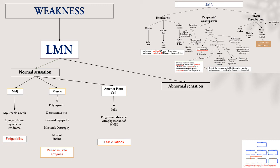In a lower motor neuron pattern of weakness with normal intact sensation, it is useful to identify differentials according to where the lesion could originate. Neuromuscular junction disorders — such as myasthenia gravis and Lambert-Eaton myasthenic syndrome — present with fatigability. In myasthenia gravis, the weakness worsens with repetitive movements, while in Lambert-Eaton the weakness improves with movement.